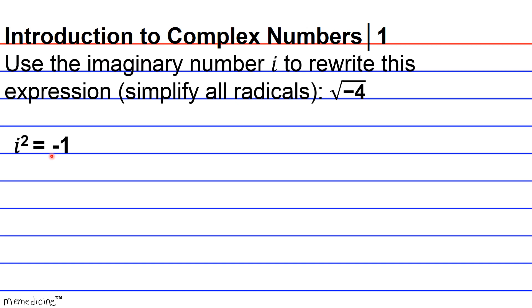For any positive real number, let's give it the variable c. The principal square root of the negative version of c is going to be i radical c, or the square root of negative c is equivalent to i radical c.